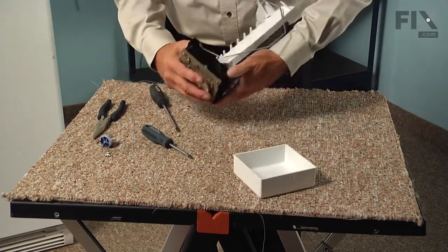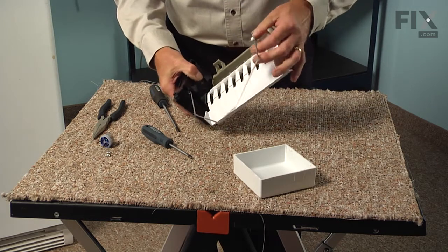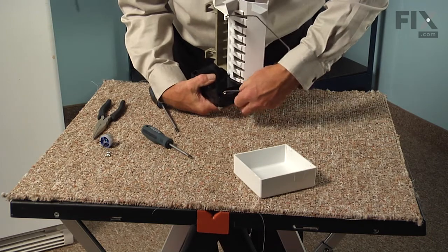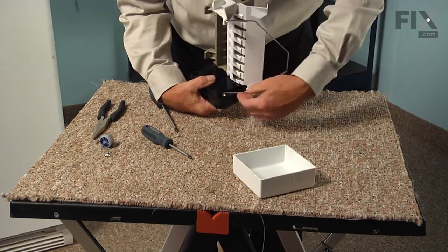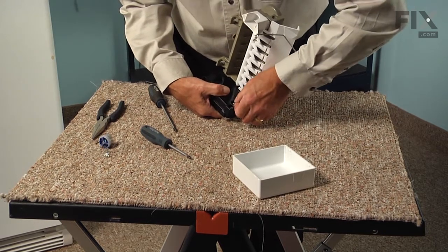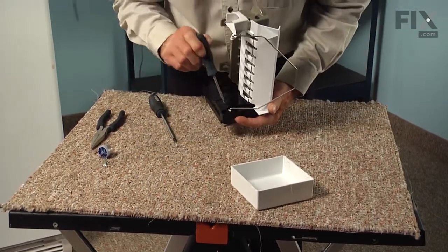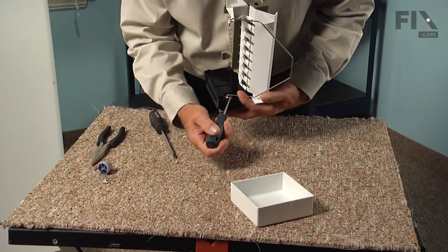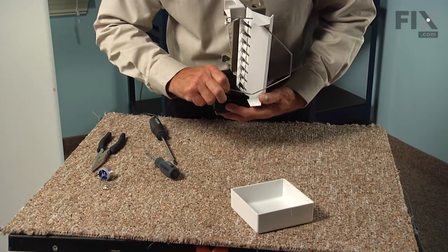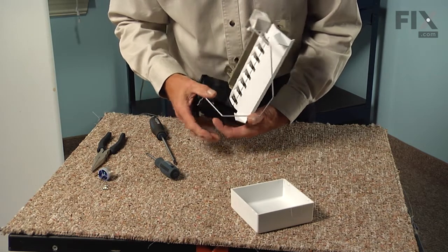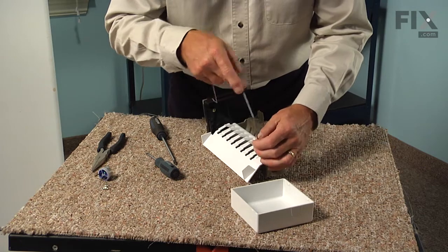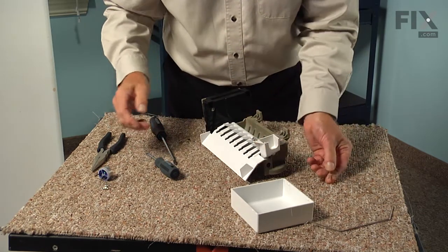Now next we'll want to disconnect the bail arm. It's easier to remove it from the back of the ice maker head. So put it down into the off position and then carefully pry that over the little slotted opening until it becomes free and then you can pull it over the back and just set it aside for now.